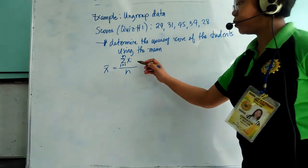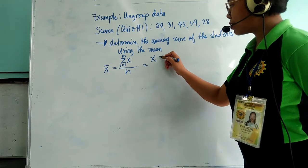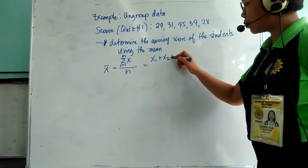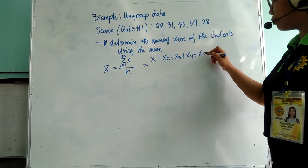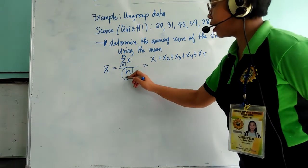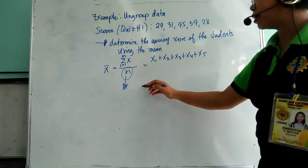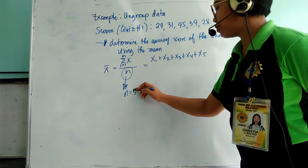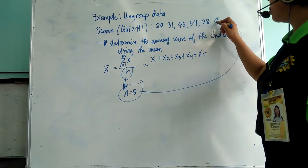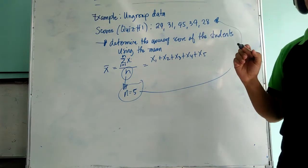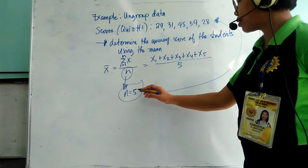So if you are going to expand the summation notation, we have x of 1 plus x of 2 plus x of 3 plus x of 4 plus x of 5, divided by 5. So we have 5 as our last observation because n equals to 5. Where did we get 5? We have 5 students as our sample. So divided by 5 because n is 5.